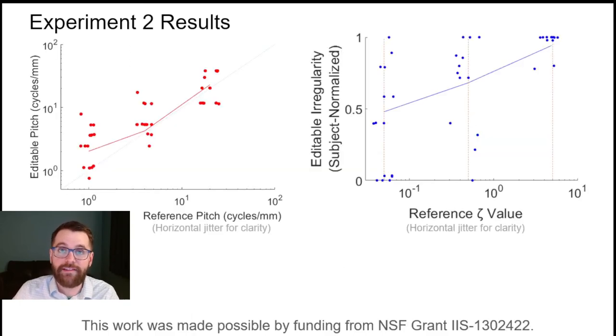Experiment 2 demonstrated that subjects tended to use pitch and irregularity parameters as expected, although pitch was observed to be used in a more reliable fashion than irregularity.